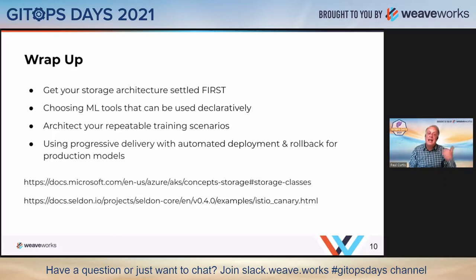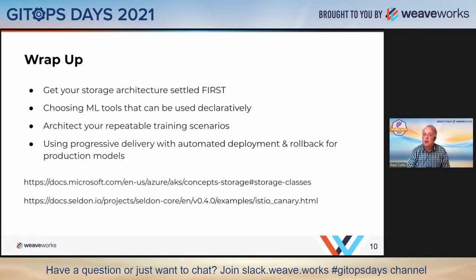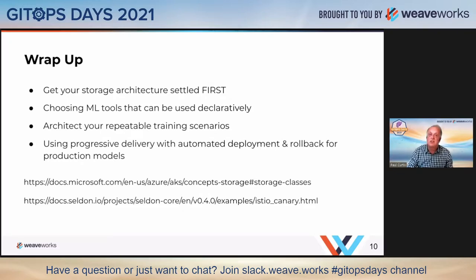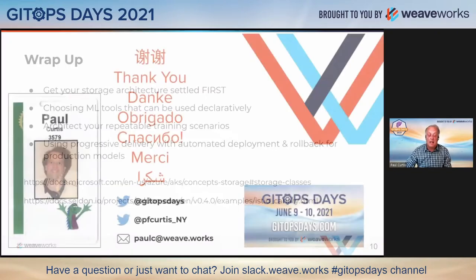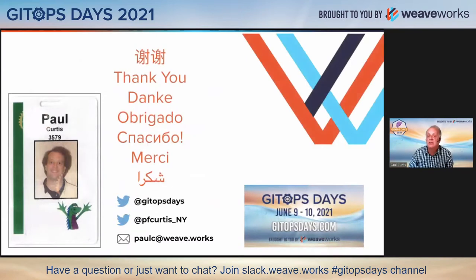You get the same benefits from MLOps that you would from DevOps. Architect your repeatable training scenarios — make model training a continuous integration process that can be automated. The more automated it is, the less time data scientists spend on things they don't need to know about. They should be focused on tweaking the model, getting the feature choice right, and ensuring parameters are correct. And for production serving, definitely look at progressive delivery tools. Flagger is the choice here — written by Weaveworks engineers, it's part of the Flux CNCF project and is GitOps-enabled tooling for progressive delivery.